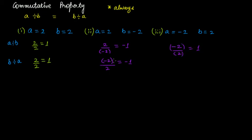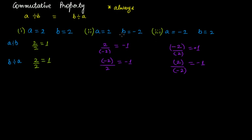In the third case, a divided by b gives minus 1, and b divided by a gives minus 1 as well. So in all three cases: in the first example a divided by b equals b divided by a; in the second example a divided by b equals b divided by a; and in the third example a divided by b equals b divided by a.